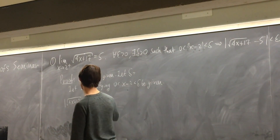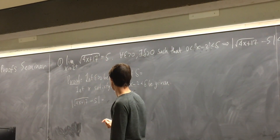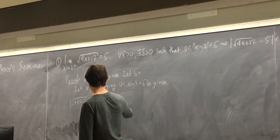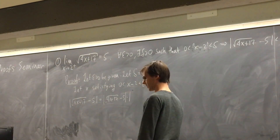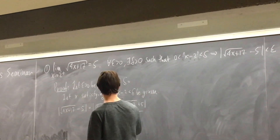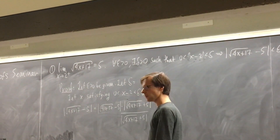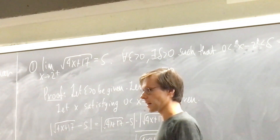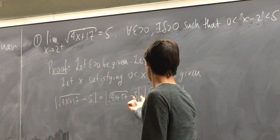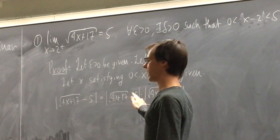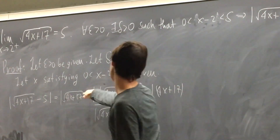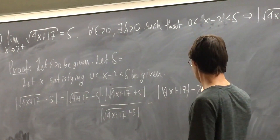Multiply through by the conjugate. We want to remove the square root, because our hope is that the x minus 2 quantity will come out if we do that. So let's multiply root(4x + 17) minus 5 by the conjugate — root(4x + 17) plus 5 — and divide by the conjugate as well to keep everything equal. In the numerator we can combine the two absolute values, since abs(A)·abs(B) = abs(AB).